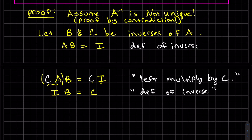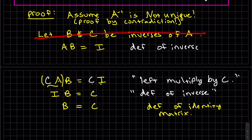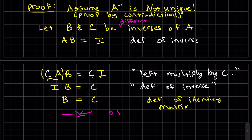Well, now I times B is B is equal to C, definition of the identity matrix. And here is our contradiction because these were supposed to be different inverses. They're not unique. That's our contradiction of our assumption. So therefore, our assumption is incorrect. Done. That's our first little mini proof.